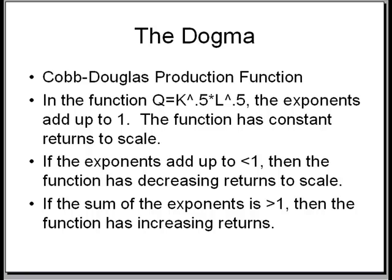If the exponents added up to less than 1, like 0.75, then the function has decreasing returns to scale. If the sum of the exponents is greater than 1, then the function has increasing returns to scale.